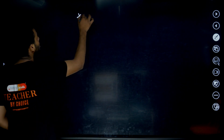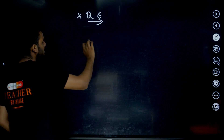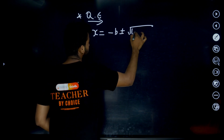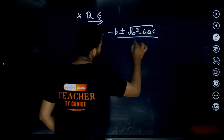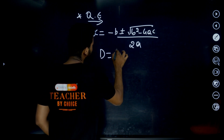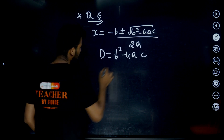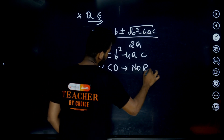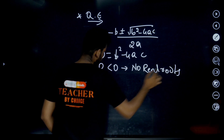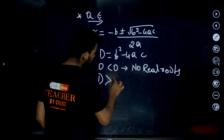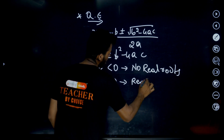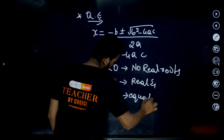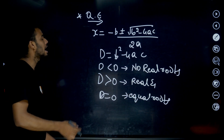Next, quadratic equation. The quadratic formula is very important. The discriminant D = B² − 4AC. If D is less than 0, there are no real roots. If D is greater than 0, roots are real and different. If D equals 0, the roots are equal.